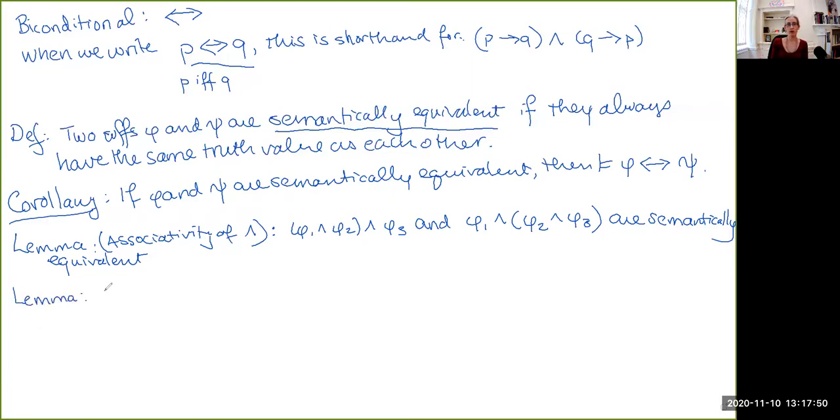So we have a similar result. So the associativity of disjunction, and that just says that if you have three sentences, phi one, phi two, and phi three, and you disjoin the first two together, and then disjoin that to the third, or if you first disjoin the second two, so phi two and phi three, and then you disjoin the first one to it, these are also semantically equivalent.